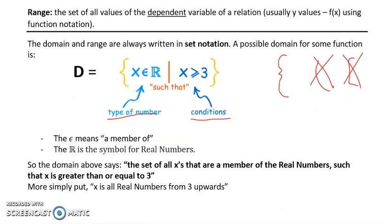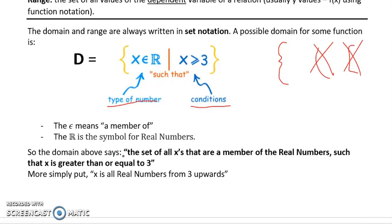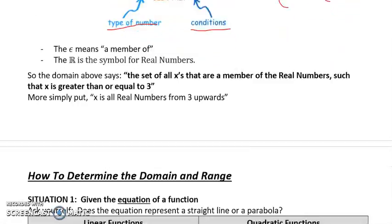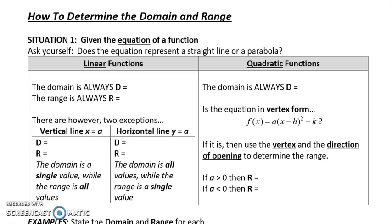This reads: the set of all X's that are a member of R — the real numbers — such that X is greater than or equal to 3. More simply put, X is a real number from 3 upwards. If that didn't make sense to you, I encourage you to go back and watch that again, and try to do your own writing from the words — read the sentence and try to write it out in that set notation.